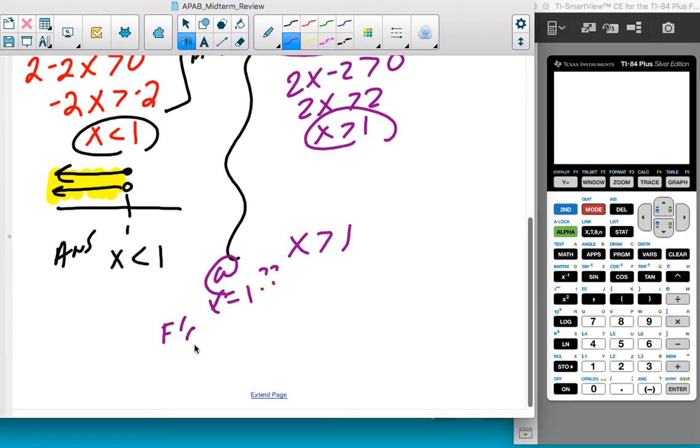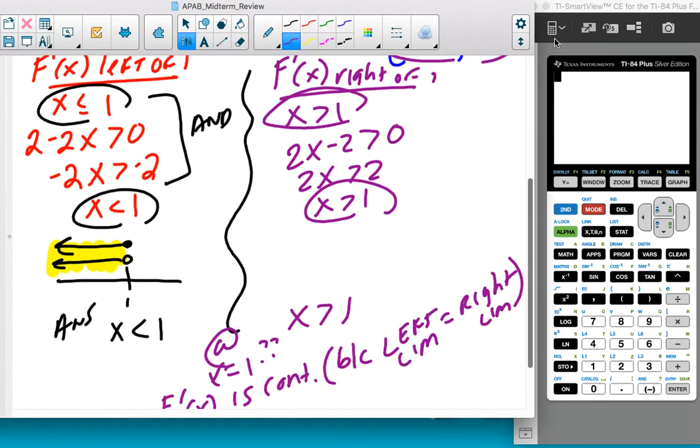Well, we know that F prime of x is continuous, because we already saw that the left limit was equal to the right limit.